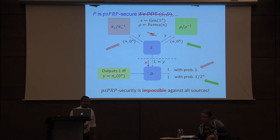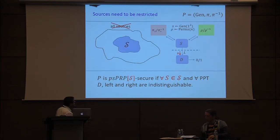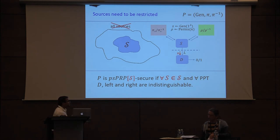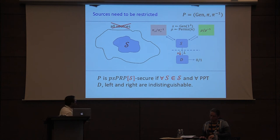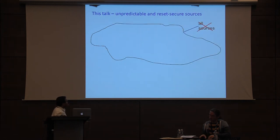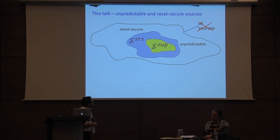To define non-trivial security notions, we need to restrict sources. We say a PSPRP is PSPRP-S secure if for all sources in the class S and all distinguishers, the two worlds are indistinguishable. In this work, we introduce two source classes adopted from the UCE framework: unpredictable sources and reset secure sources. Both of these restrictions capture, in some way, that the distinguisher cannot predict the queries made by the source — which is what led to the attack in the previous case.